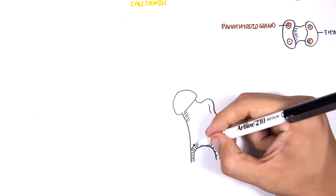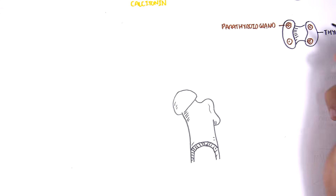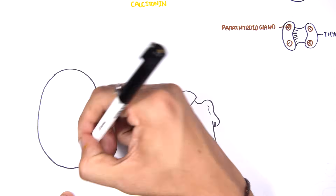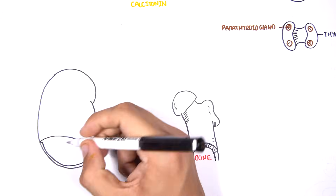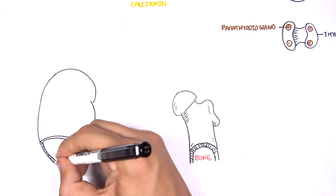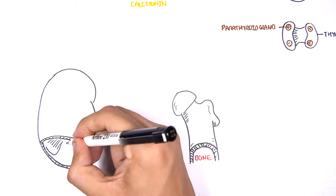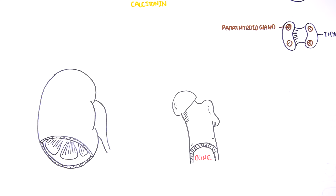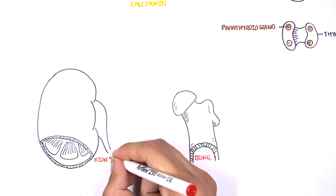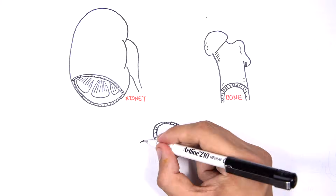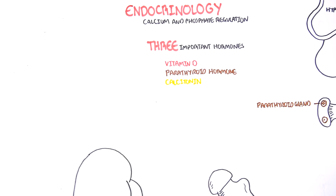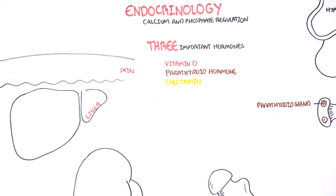Other important organs we will discuss include the bone, because this is where calcium and phosphate — the minerals — can be found. In fact, 99% of calcium is stored in the bone. We will also talk about the kidneys, the gut (the GIT), the liver, and the skin.